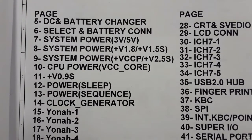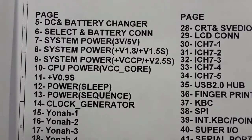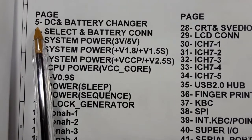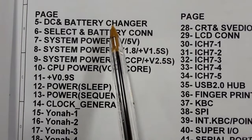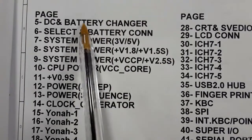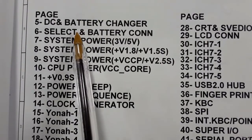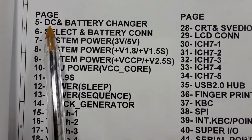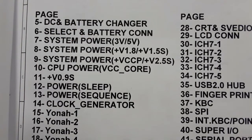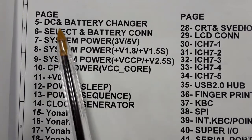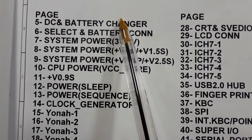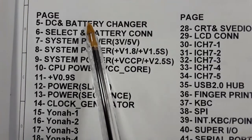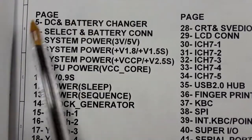In page number five we have DC and battery changer — note it's called 'changer' not 'charger' because the power management IC changes between the adapter and the battery. When you plug the adapter, the motherboard draws power from the adapter. When you remove the adapter, the power management IC automatically switches the source of power to the battery.